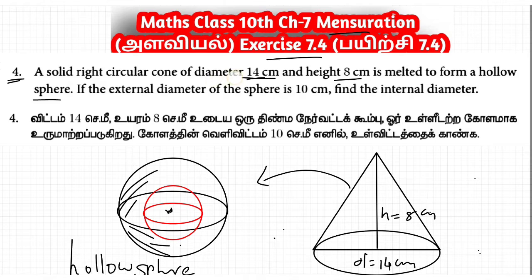A solid right circular cone of diameter 14 cm and height 8 cm is melted to form a hollow sphere. If the external diameter of the sphere is 10 cm, find the internal diameter.